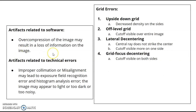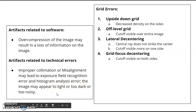Artifacts related to software may include over compression of the image, which results in loss of information. Technical errors include improper collimation or not being lined up properly, which can cause exposure field recognition error or your histogram won't process correctly. It can appear as too light, too dark, or noisy.